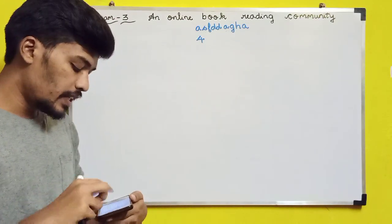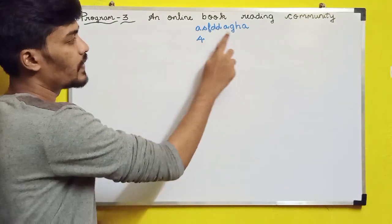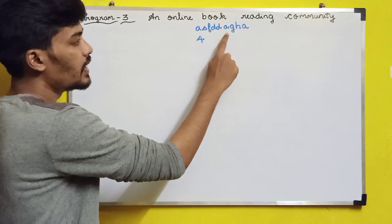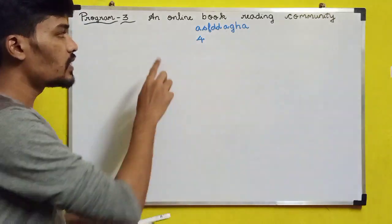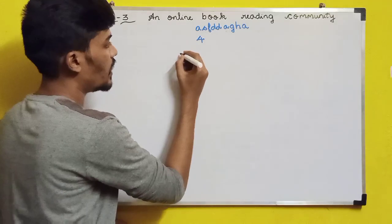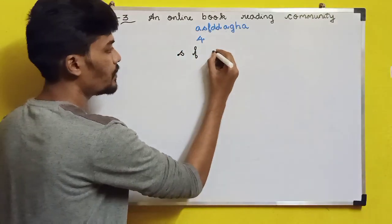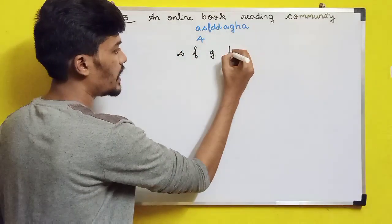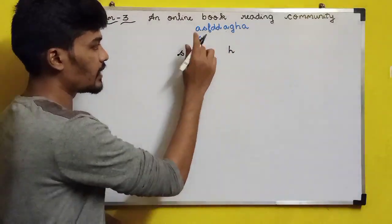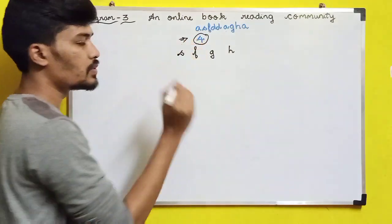They have given a string like this: A, S, F, D, D, A, G, H, A. In this, how many unique characters are there? S is a unique character, F is a unique character, G and H — so these four characters are unique. If you count these unique characters, you get four. That is the output of this program.